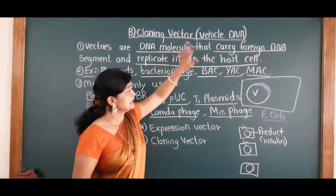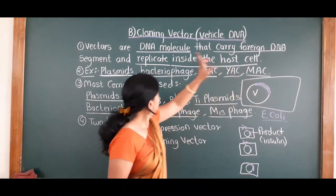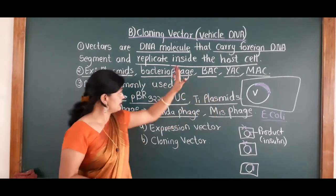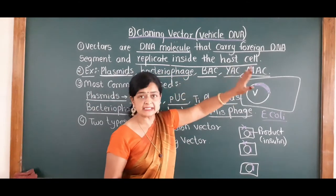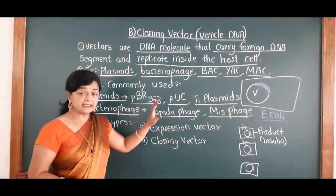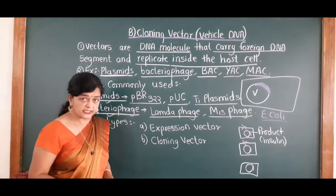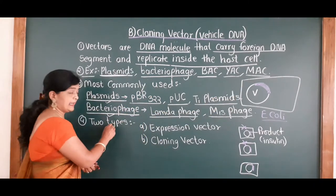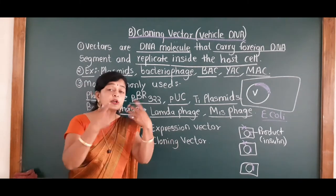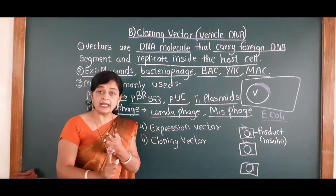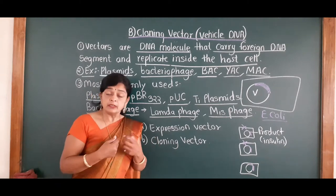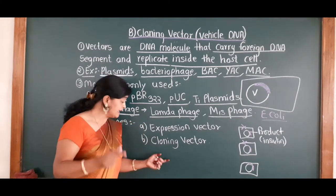So here we are studying cloning vector, which is also called vehicle DNA. Vector is nothing but a DNA molecule which contains a foreign DNA segment and it replicates inside the host cell or bacterial cell. Examples include plasmid, bacteriophage, BAC, YAC, and MAC. The most commonly used vectors by scientists are plasmids and bacteriophages. Vectors are of two types: expression vector, which gives a product like vaccine, insulin, or antibiotics; and cloning vector, which is used to obtain the desired segment or gene of interest.